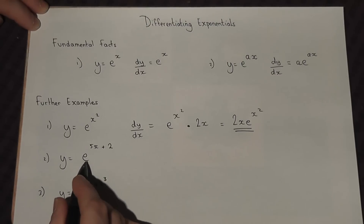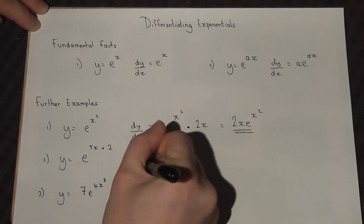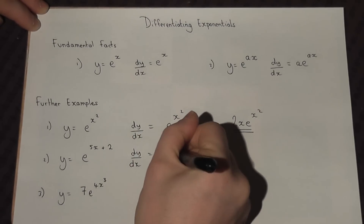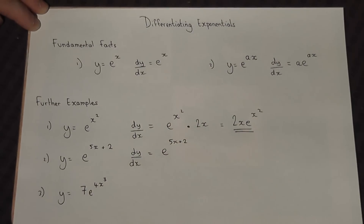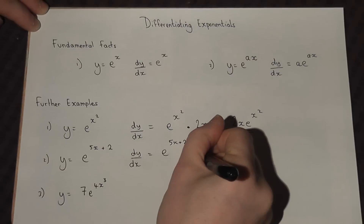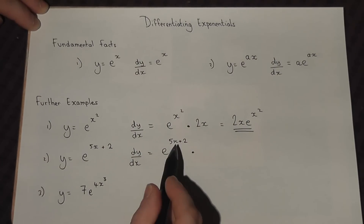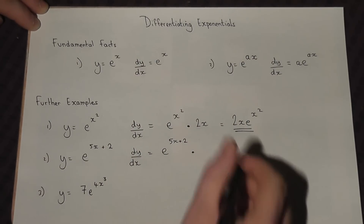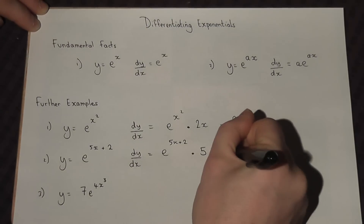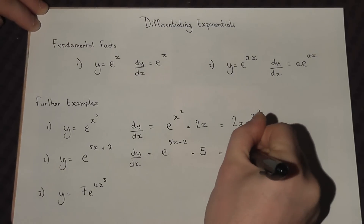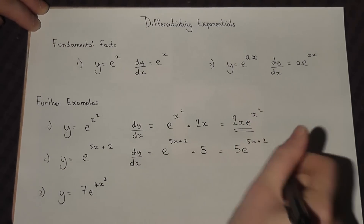For the second example, remember the golden rule: we keep e the same and then multiply by the power part differentiated. Well, 5x plus 2 differentiates to just 5. So that equals 5·e to the power of 5x plus 2.